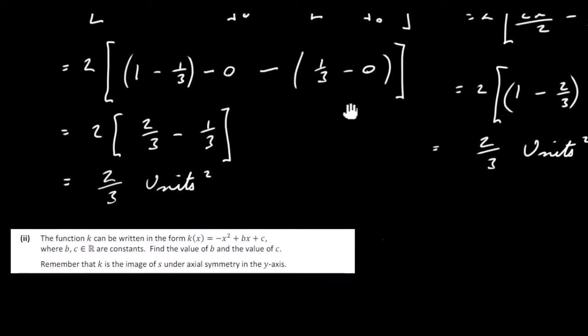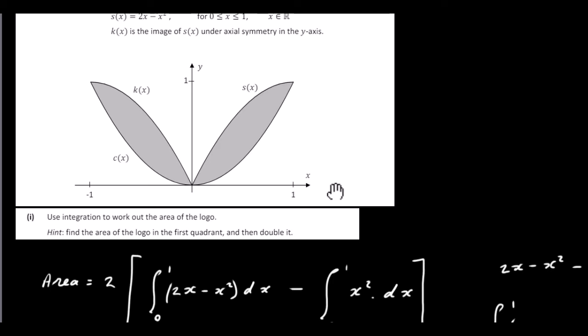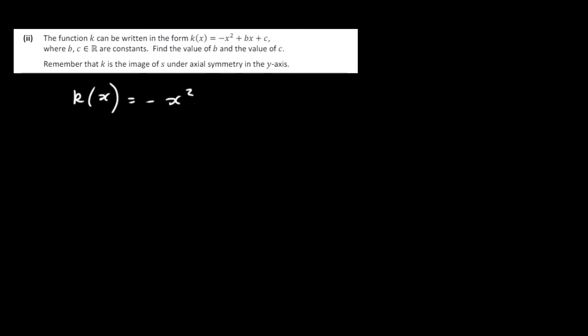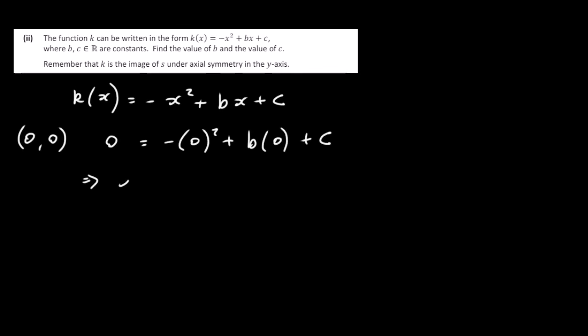Now for part C(ii): the function K can be written as K of X equals minus X squared plus bX plus c, where b and c are constants. We need to find b and c. K is the image of S under axial symmetry in the Y-axis. First, we can find c: the point (0, 0) is on K, so substituting x equals 0 and y equals 0 gives c equals 0.